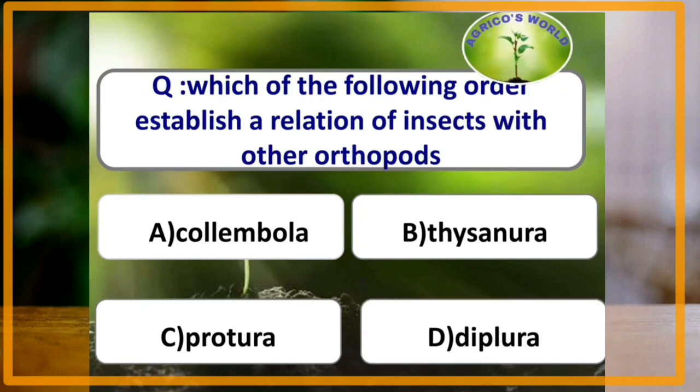Which of the following order establishes a relation of insects with other arthropods? The answer is Diplura. Diplura is an order which establishes a relation with other arthropods.